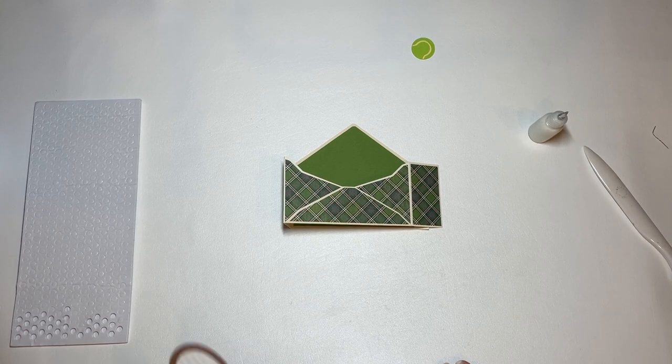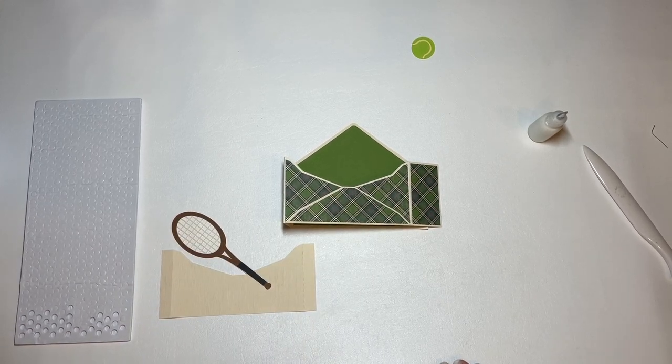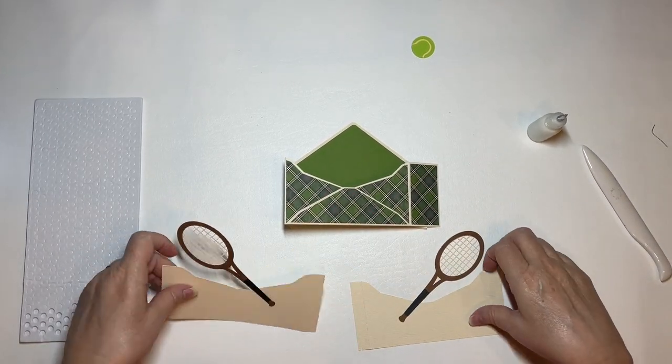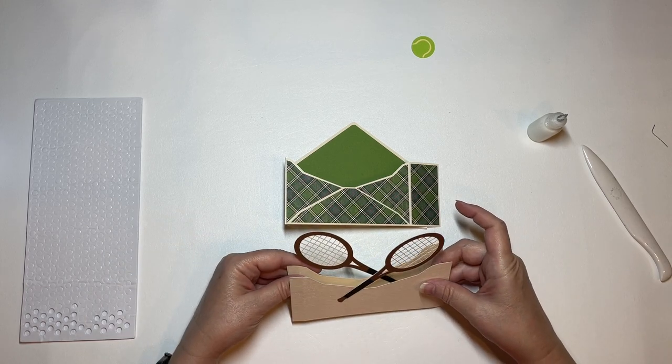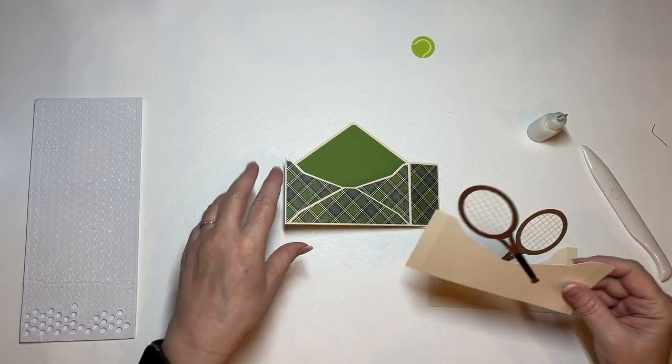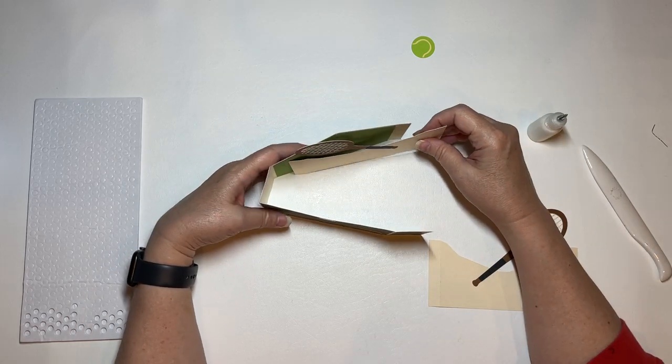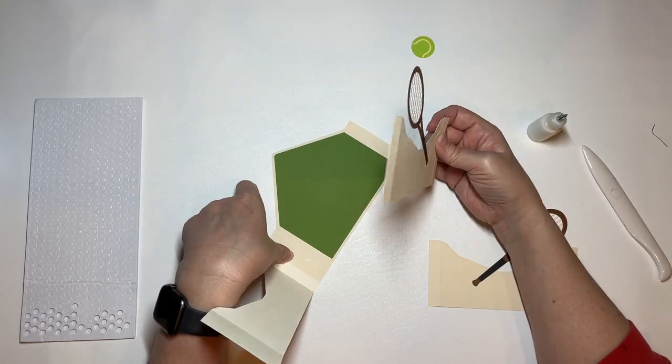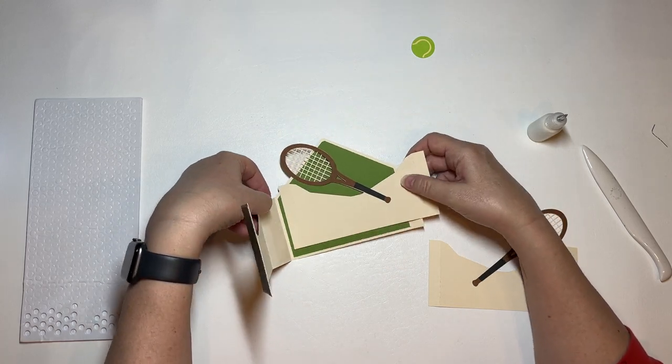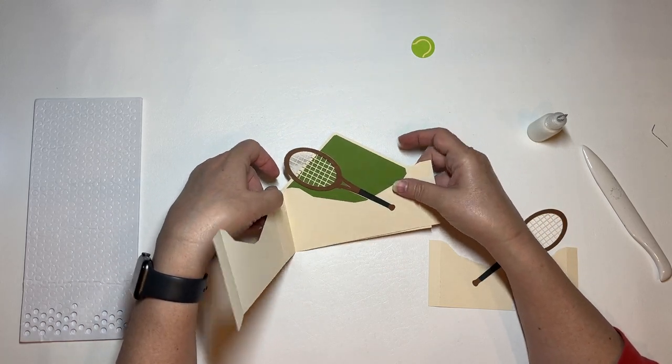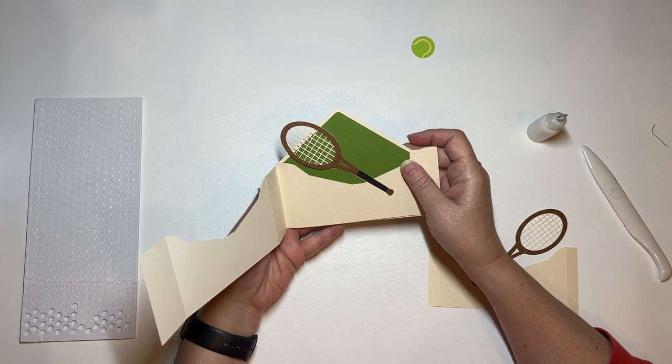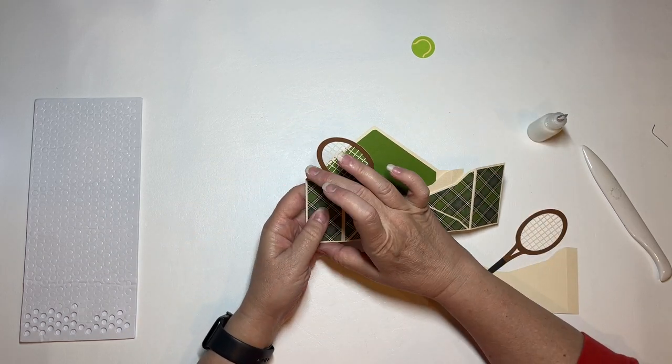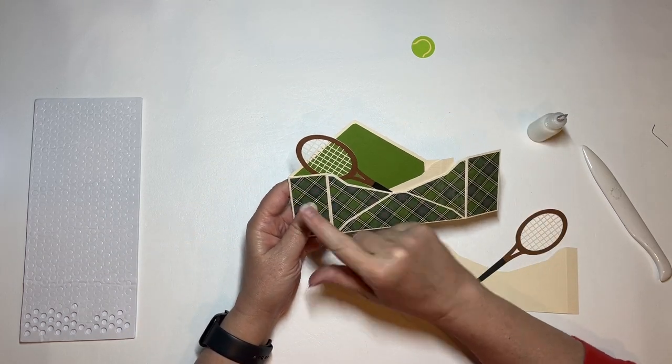And let's pull out our rackets. It doesn't matter which way they go. When I put this in, I'm going to leave my tabs out flat. I'm going to lay this down against the back and then fold the side over, and that's how I'm going to glue it to the side.